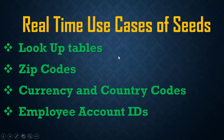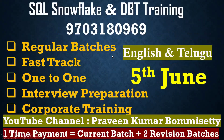Some use cases for dbt seeds include lookup tables, zip codes, currency codes, and country codes. These are examples of static data that doesn't change frequently, making them well-suited for seeds. Now we'll log into dbt Cloud and execute a practical example.